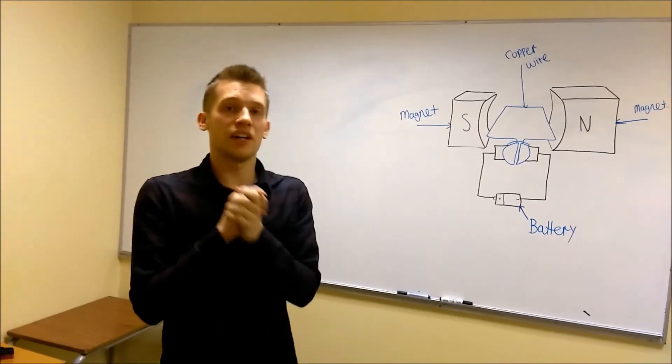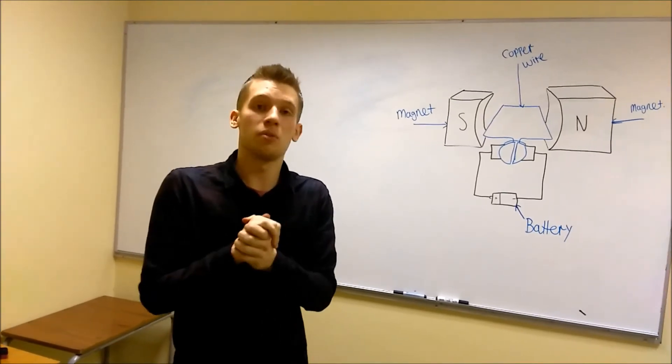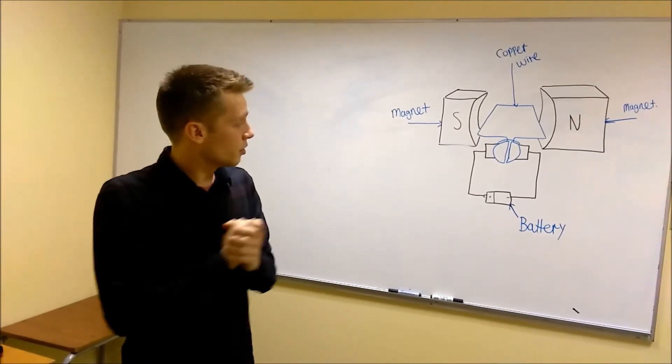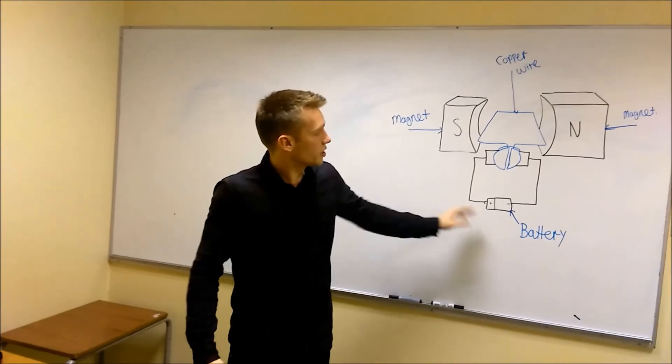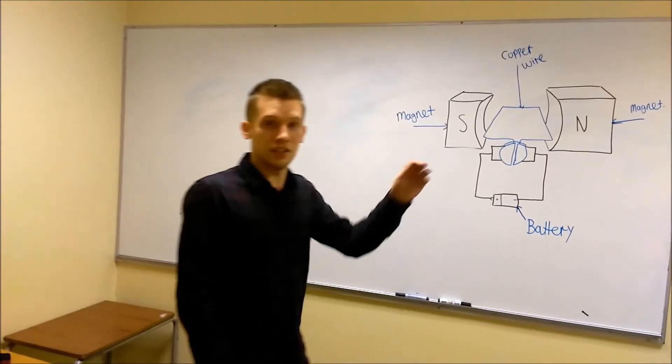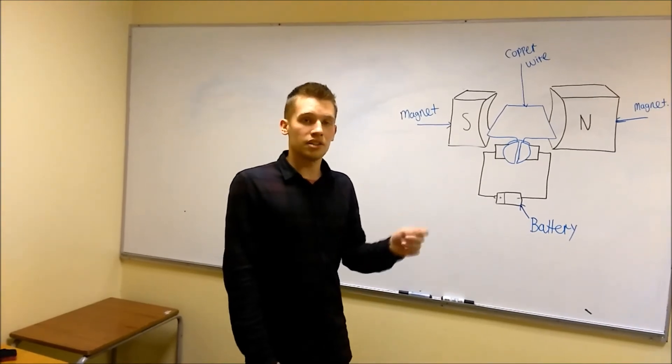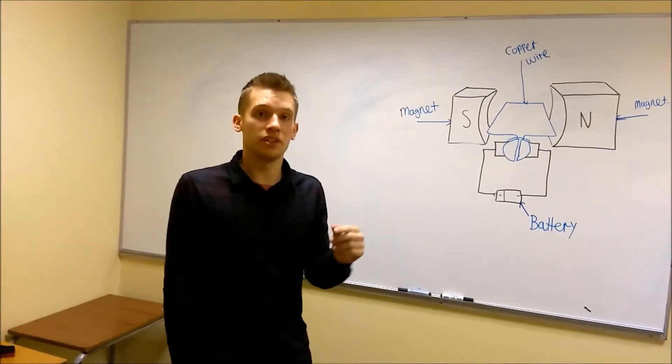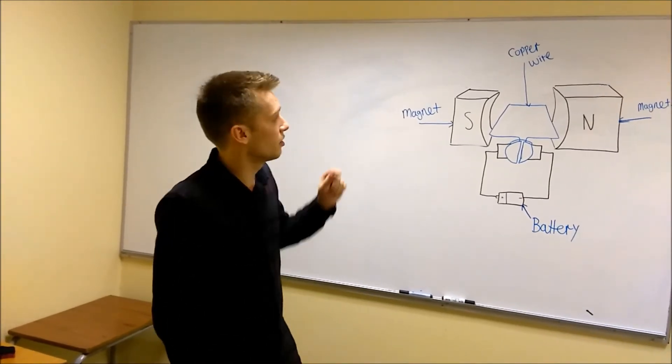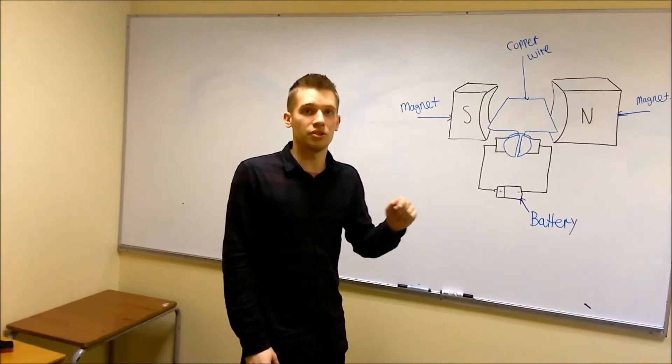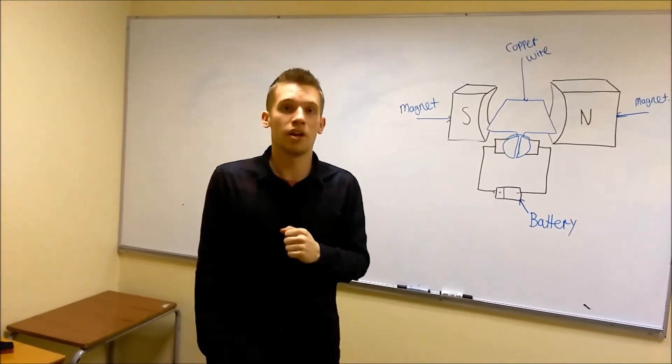So here we have a simple diagram of the DC motor. Now what's going on in this is the battery is creating a circuit with the copper wire end to end of the battery. And this is causing a current to flow through the wire. This current is causing a small magnetic field within the wire, and that is then repelled by the magnet when it passes through. And that causes the copper wire to rotate.